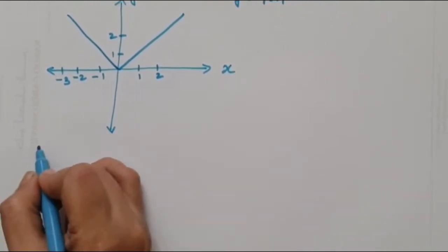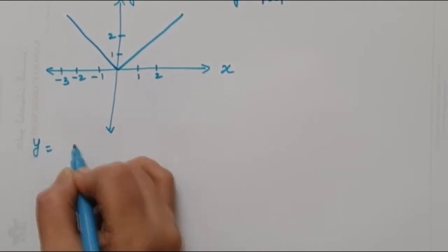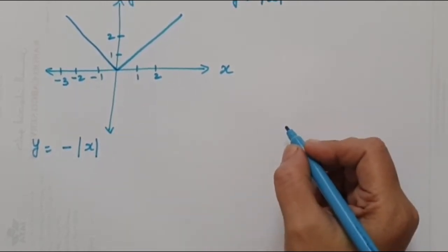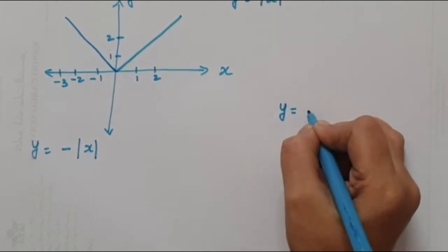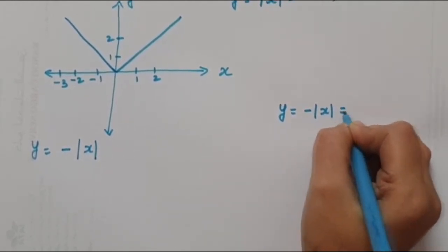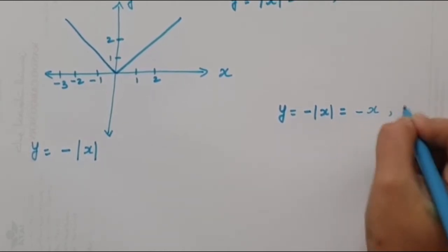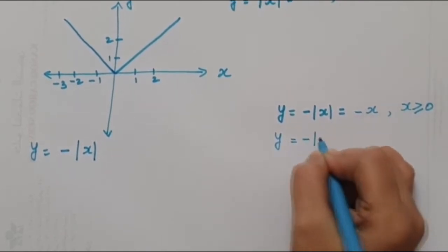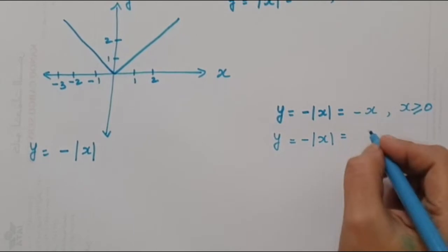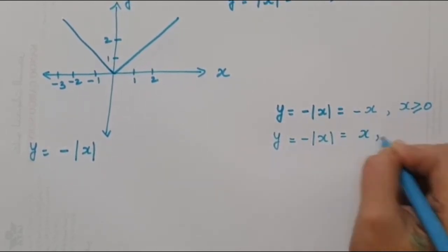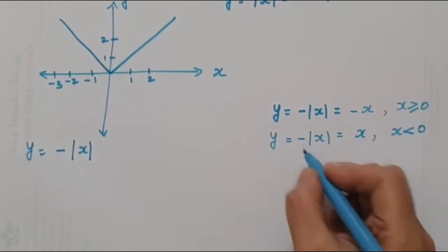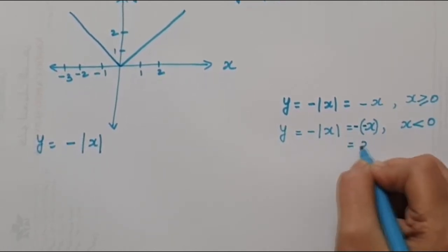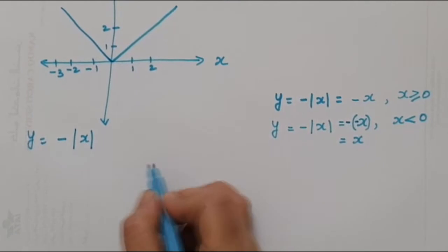Now let us draw the graph of y = -|x|. In the same way, y = -|x| equals -x when x ≥ 0, and y = -|x| equals x when x < 0, because the negative values already give a negative, and then multiplying by negative gives positive x.